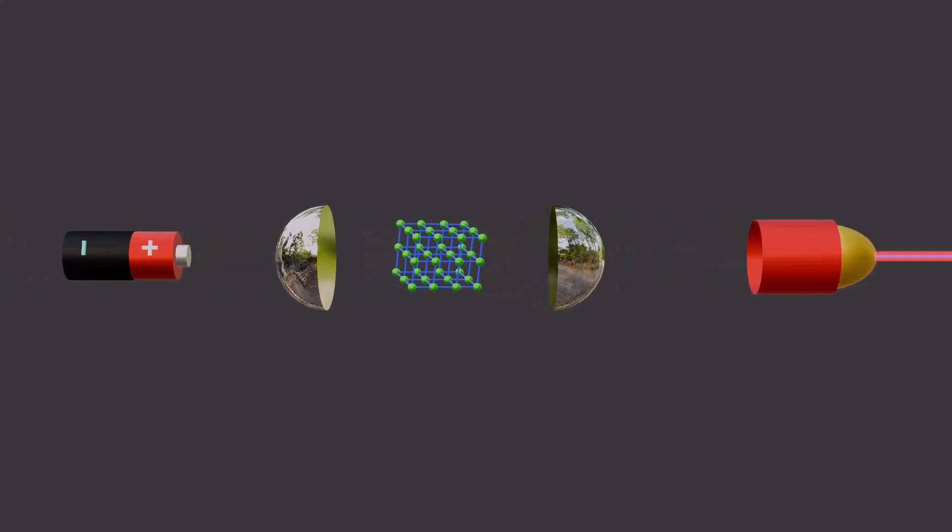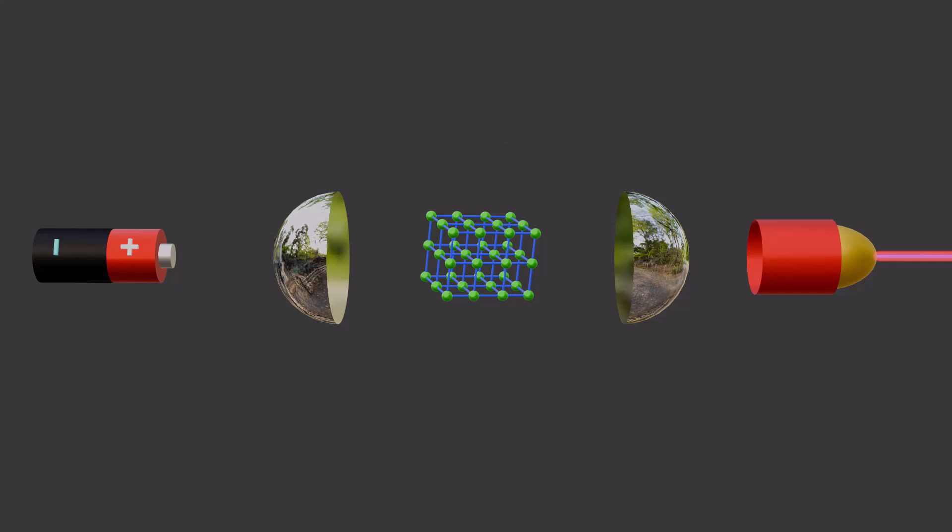Inside a laser device, there is a special material. It could be a gas, a crystal, or a semiconductor that gets energized using electricity or another light source. This energy excites the atoms inside the material, making them produce light.